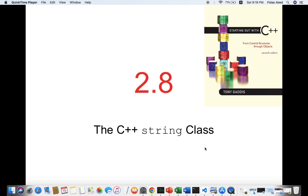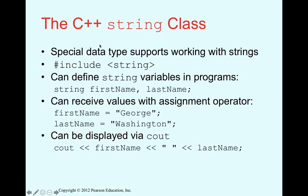Now we will talk about the C++ string class. The string class is a special data type that supports working with strings in C++. You can store sentences, words, or a string of characters inside it. If you want to use the string class, you should write at the beginning of your program: #include <string>, in the same way we write #include <iostream>.